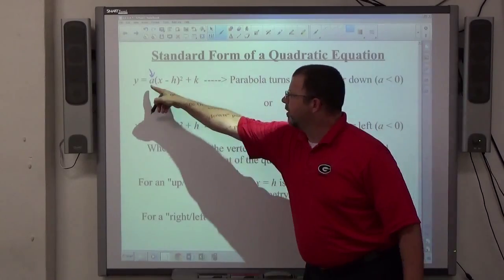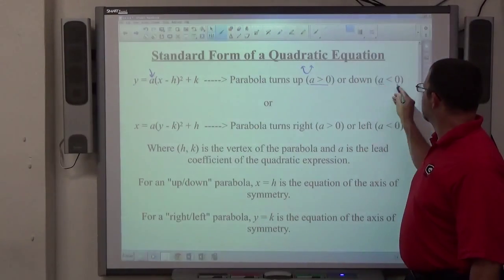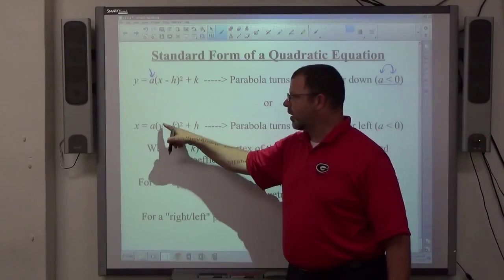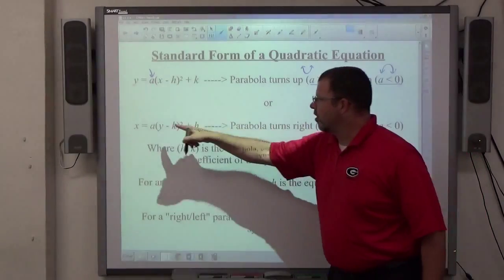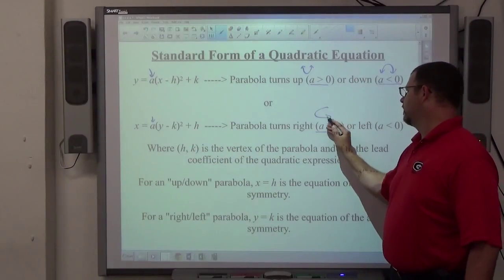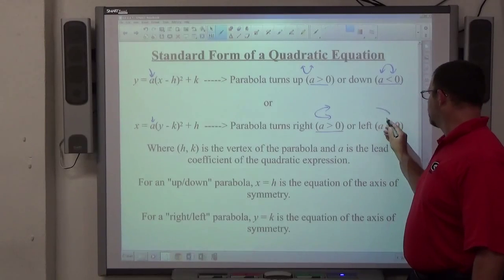If the number in front of the parentheses squared is negative, it turns down. If y is squared and x isn't, and the number in front of the parentheses, a, is positive, it turns to the right. And if a is negative, it turns to the left.